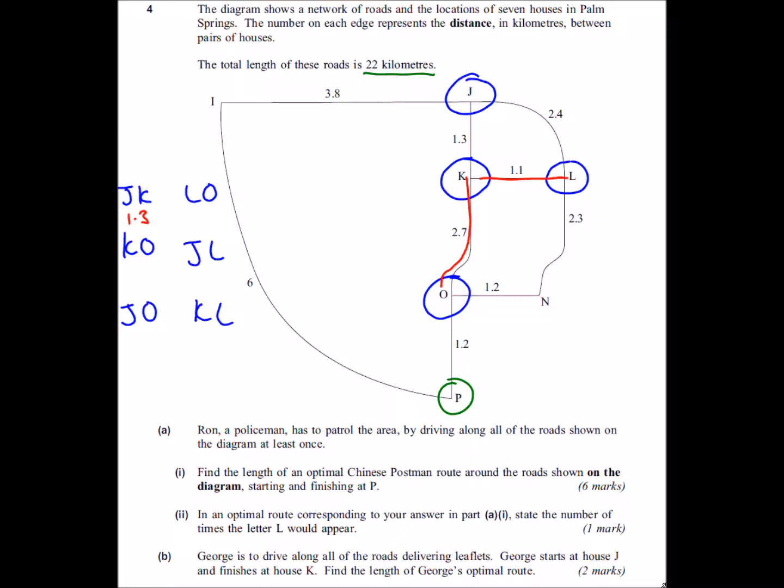Or I could go down to N and across, that would be 3.5, so the shortest one is 3.5. This total is going to be 4.8.